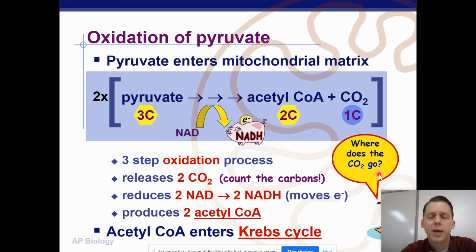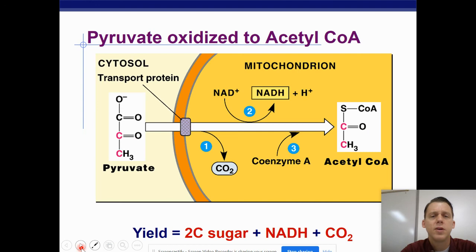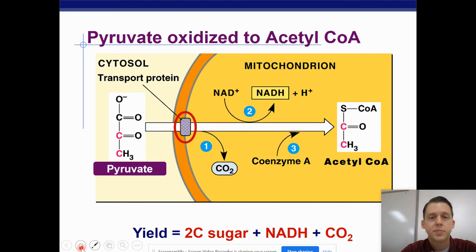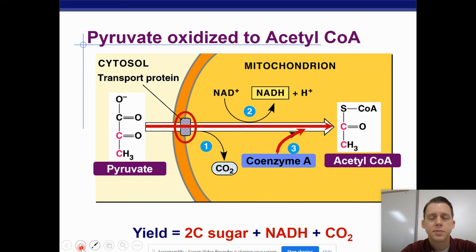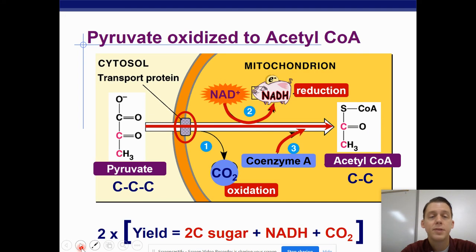Where does the carbon dioxide go? It's a waste product, so it is going to diffuse from our blood into our lungs and out into the air. Here is another picture of pyruvate oxidation — losing a carbon due to CO2. The carbon is oxidized and the NADH gets reduced, and that happens twice.